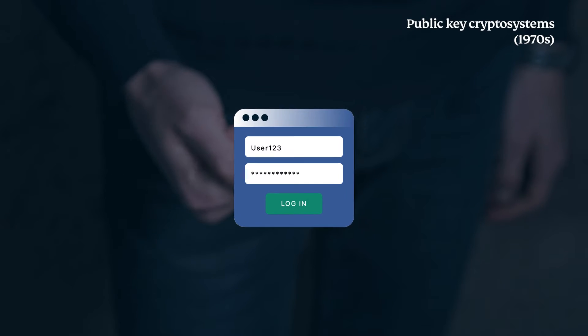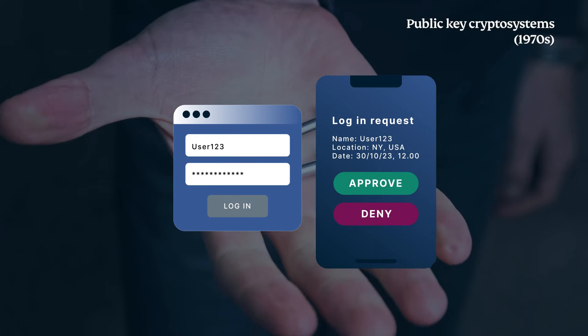Digital Age. Diffie and Hellman's public key cryptosystems revolutionized encryption, allowing secure message exchange without sharing secret keys.